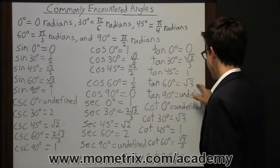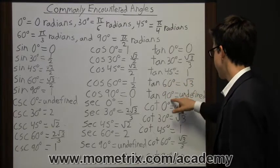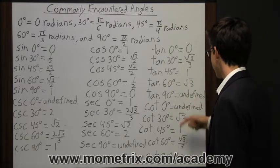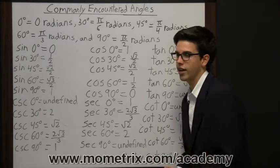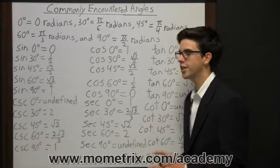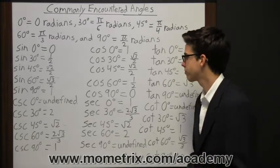Tangent of 45 is equal to 1. The tangent of 60 is equal to square root of 3. And the tangent of 90 is undefined. So focus on memorizing, if anything, just the ones that are equal to 0, 1, or undefined.